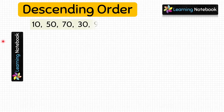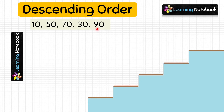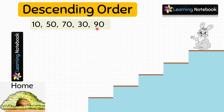Let's do one more question. This time we have to arrange these given numbers in descending order. The numbers are 10, 50, 70, 30, and 90. Again we have a bunny, and after having its food the bunny wants to go back home to take rest, but it can only go there by arranging these numbers in descending order. So let's help him.